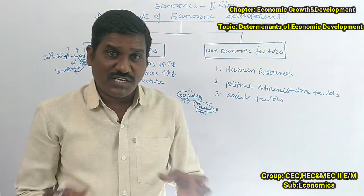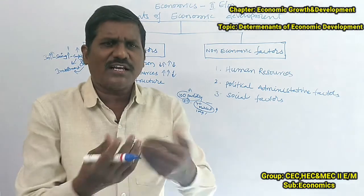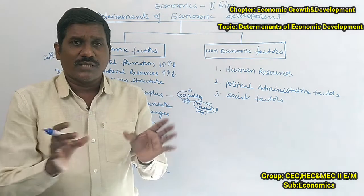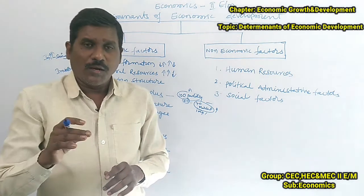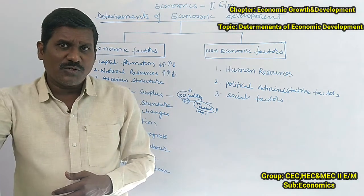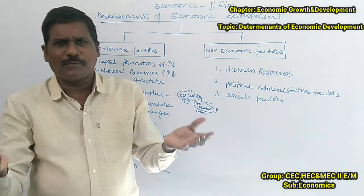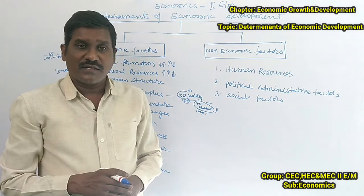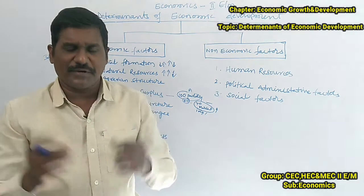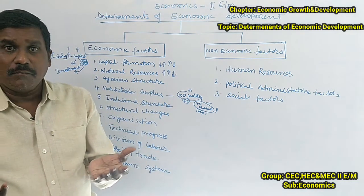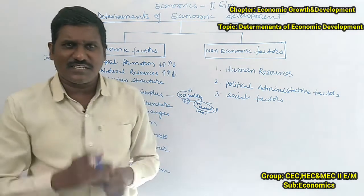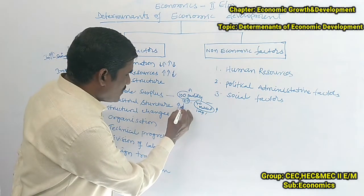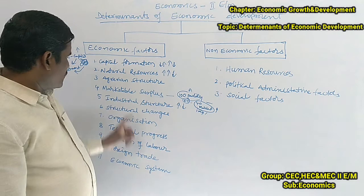The fifth economic factor is industrial structure. A strong industrial structure provides more and more employment opportunities. The government should establish more industries, including in village areas, to provide more employment. Developed countries are totally based on industrial development and have a strong industrial sector. If the industrial structure is very strong, economic development is possible; if not, development remains low.